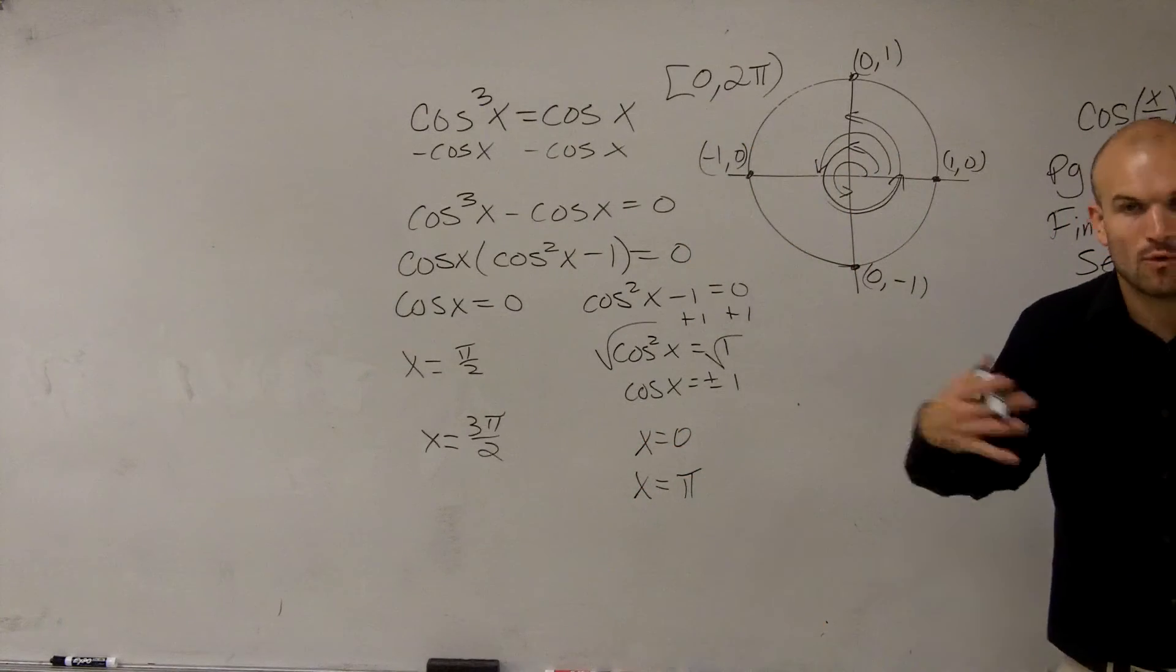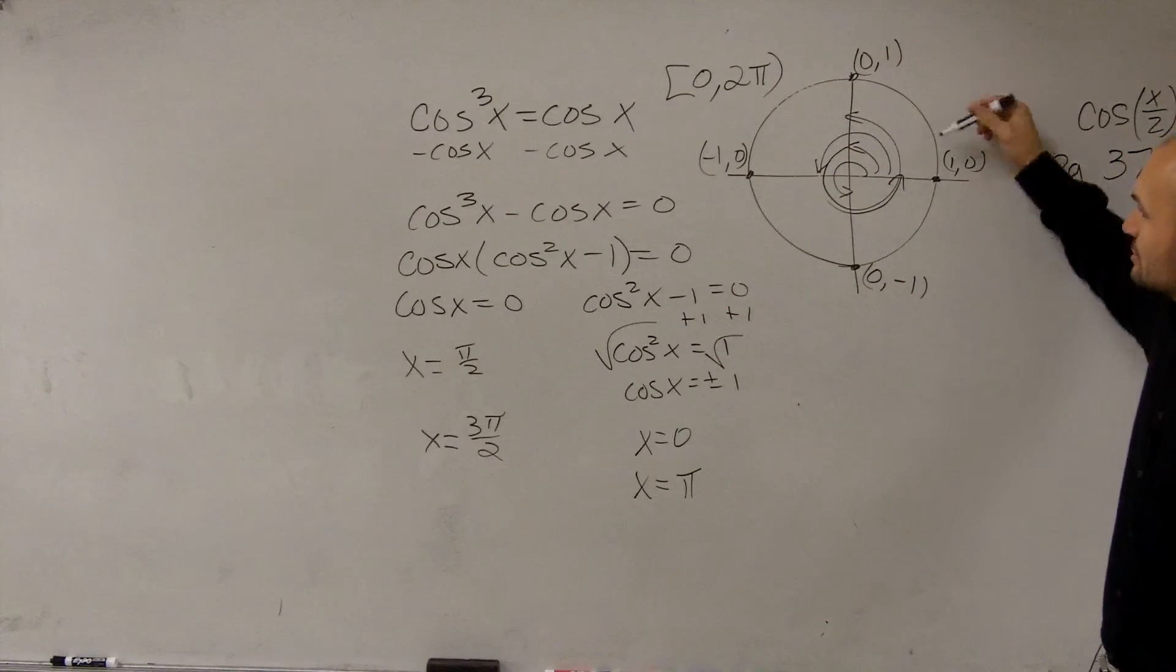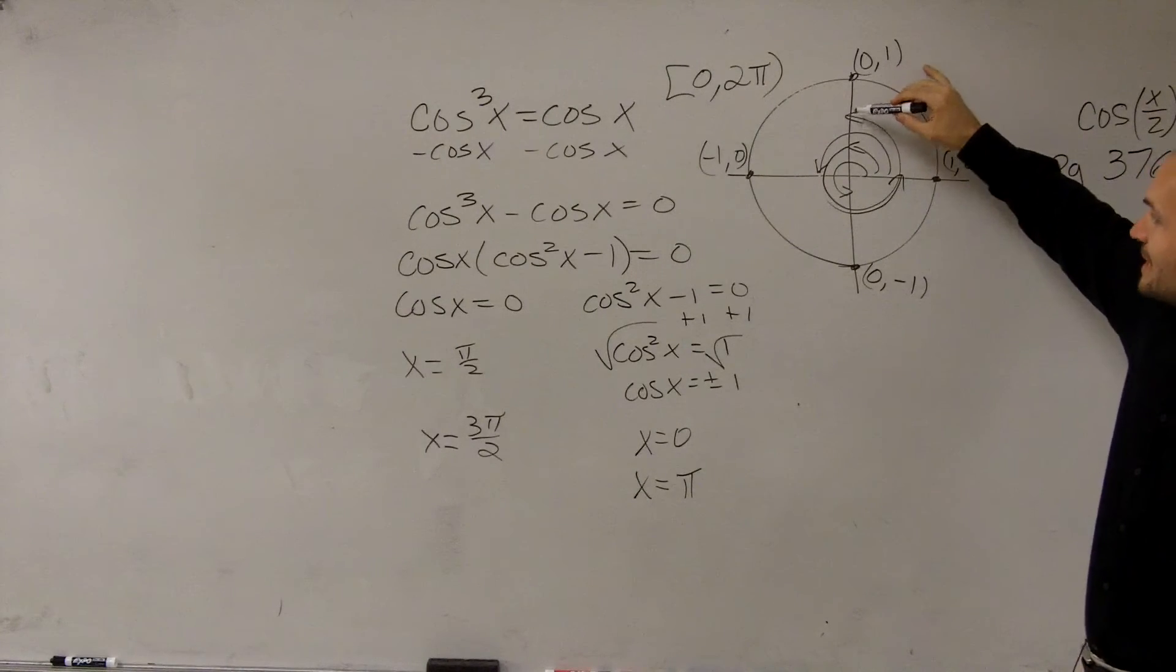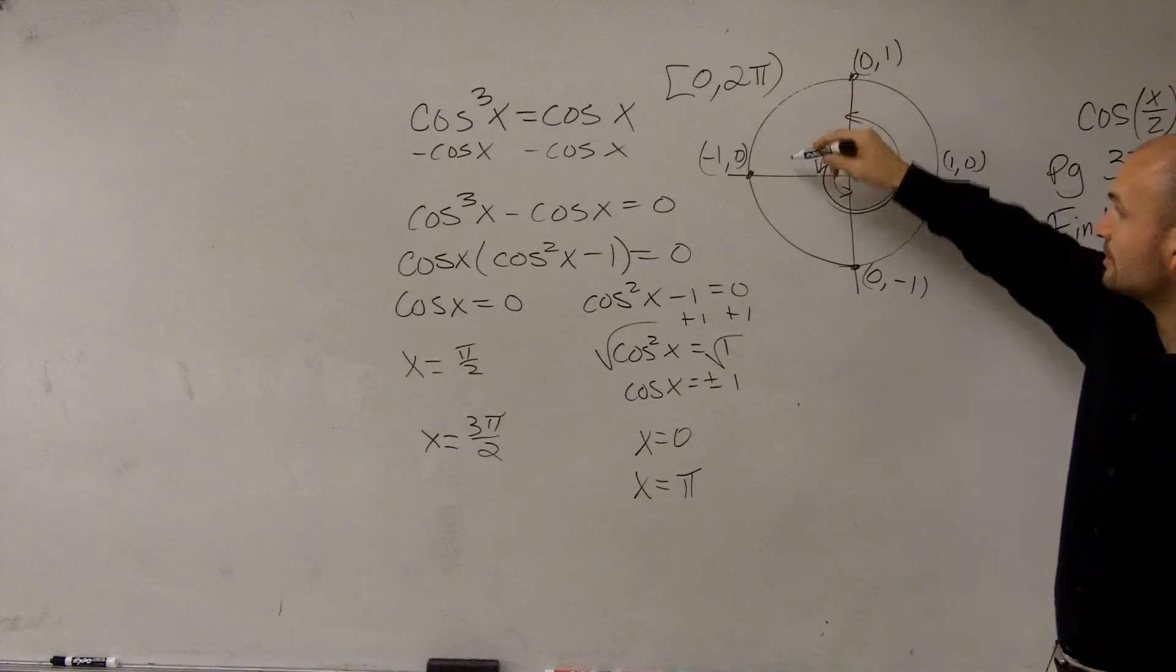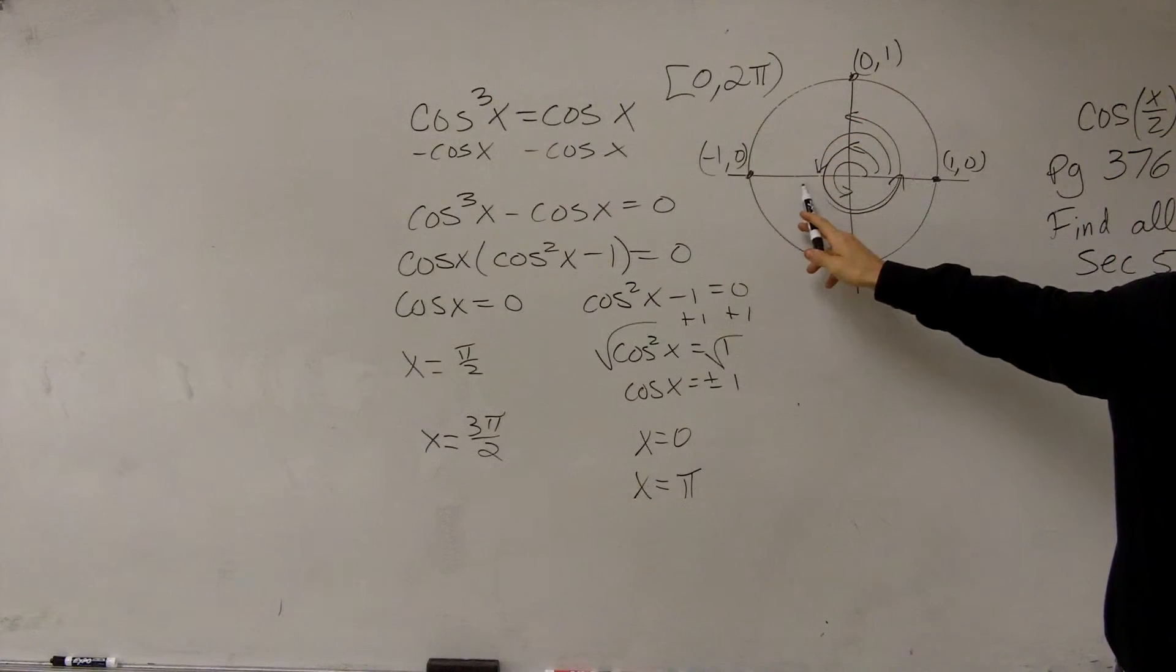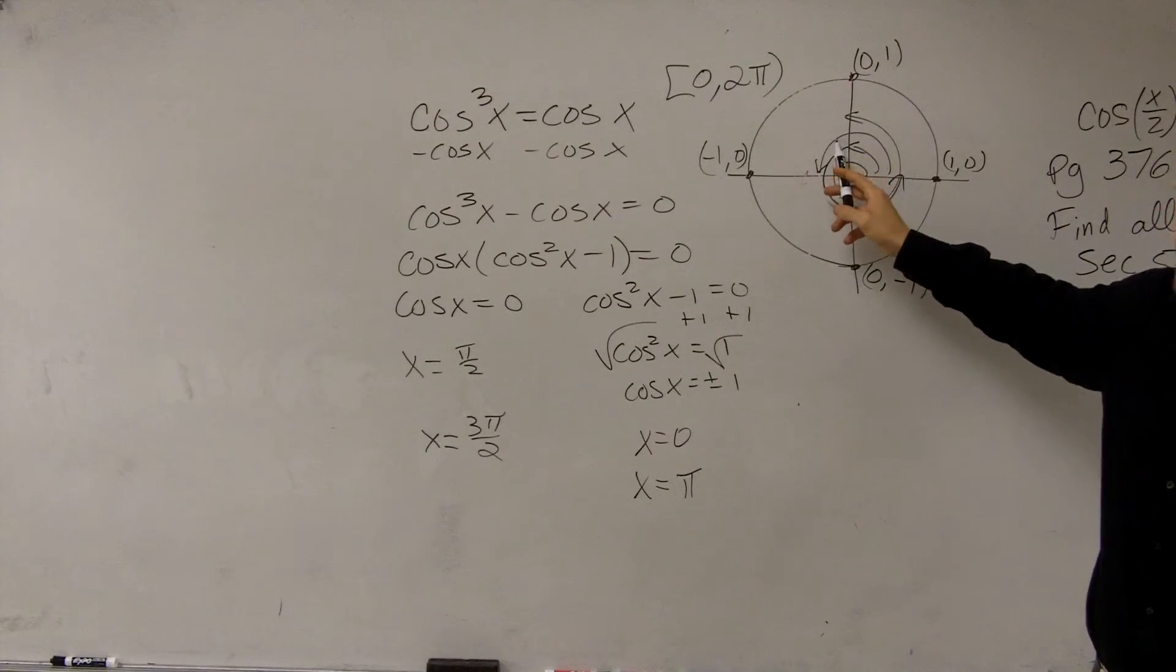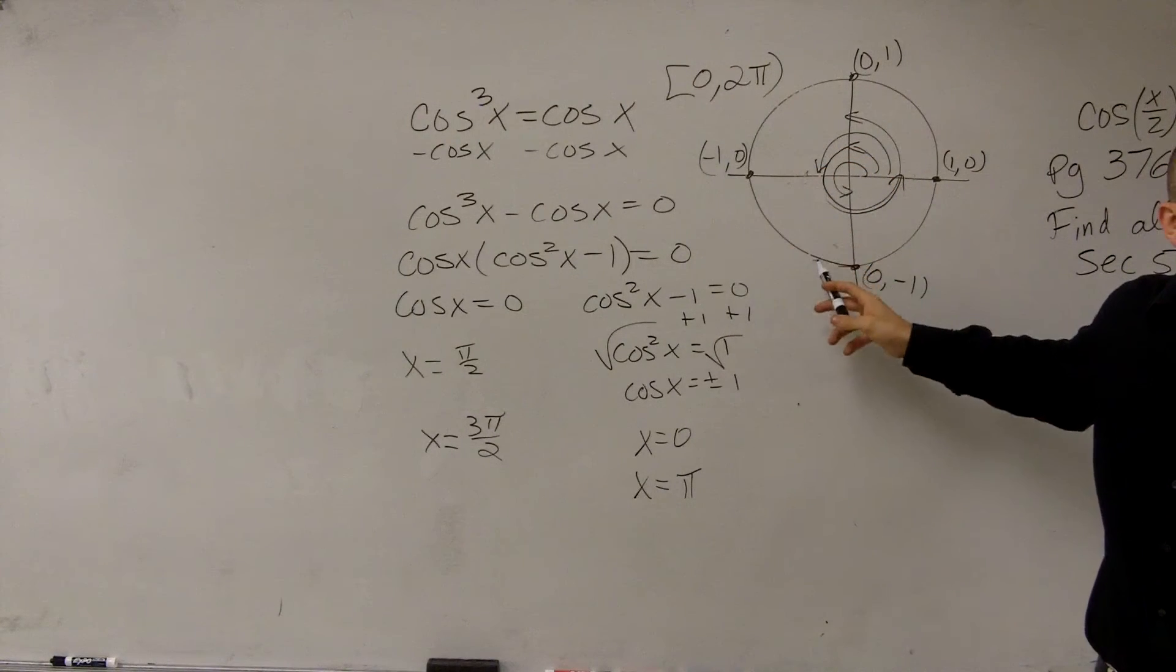Last class period, what we learned is how to write all the solutions. To write all the solutions, if you notice, if I go here's my first angle. To get to my next solution which was π, I have to add what? π/2. Then to get to my next solution, I have to add π/2, and then π/2. I can keep on adding π/2 and I'm always going to get a solution to my equation.